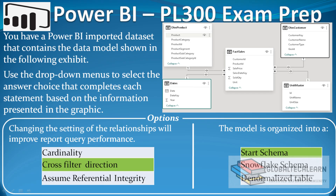So now let's go back to our question. For the first question — changing the setting of the relationship will improve the report query performance — the answer is cross filter direction, where we change it from both to single. For the second question, the model is organized into a star schema, as all dimension tables have a direct relation with the fact sales table.